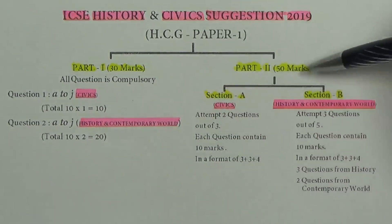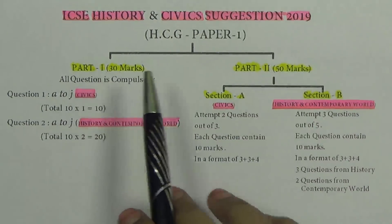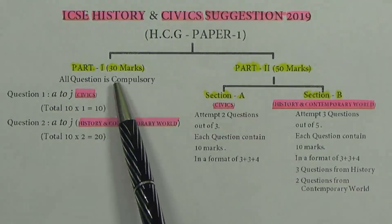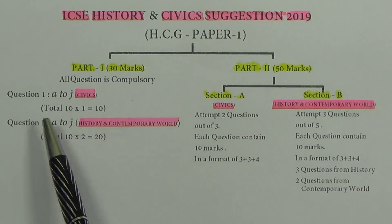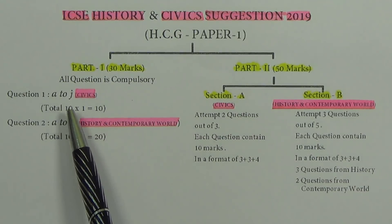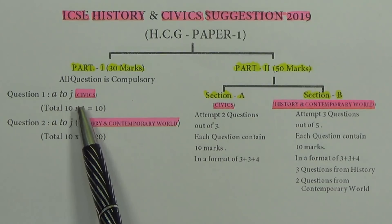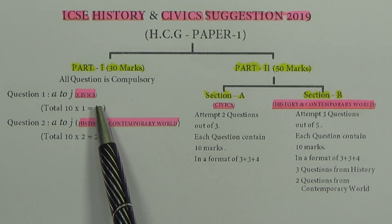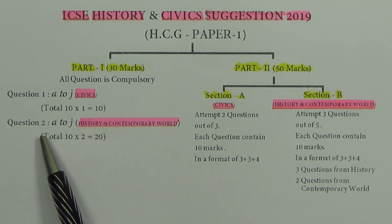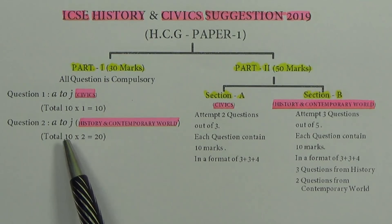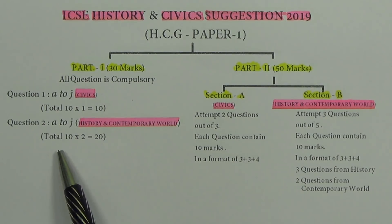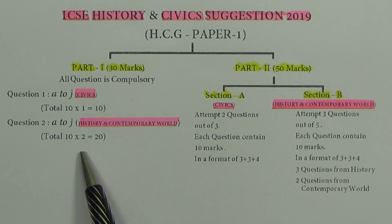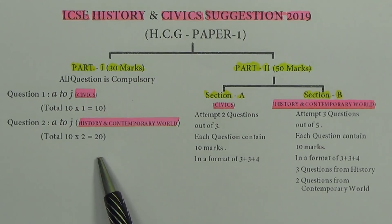It is divided into two sections: Part 1 and Part 2. In Part 1, it is a 30-mark paper where all questions are compulsory. Question number 1 contains 10 questions — A to J — which belong to the civics part, totaling 10 marks. Question number 2 consists of 10 questions from History and Contemporary World, each worth 2 marks, totaling 20 marks.